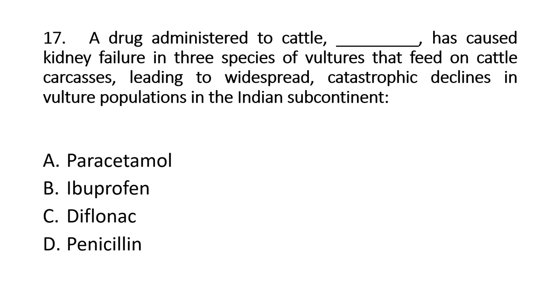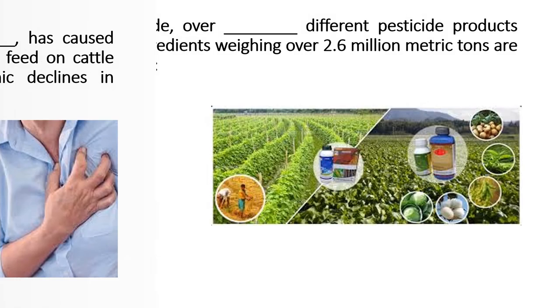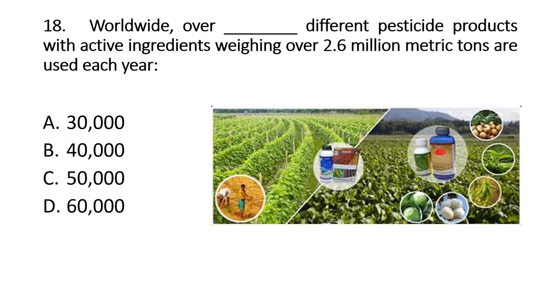Question 17: A drug administered to cattle, blank, has caused kidney failure in three species of vultures that feed on cattle carcasses, leading to widespread catastrophic declines in vulture populations in the Indian subcontinent. The right option is diclofenac.